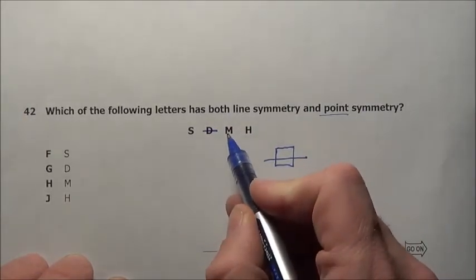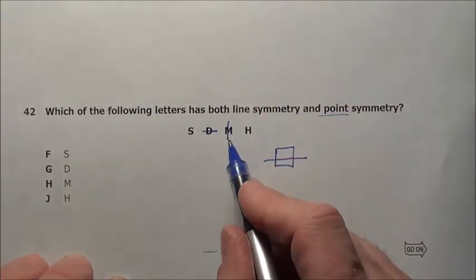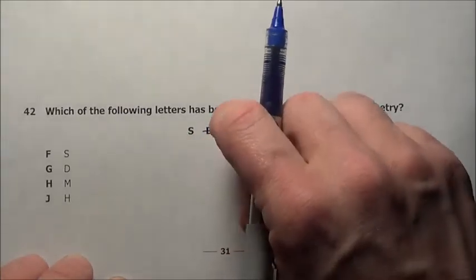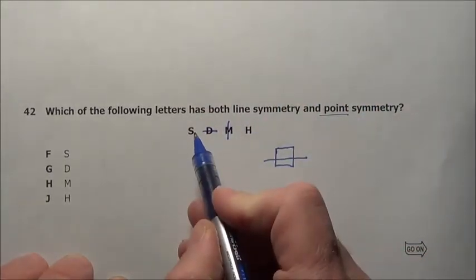What about M? Well M has nice line symmetry right down through here, vertical line of symmetry, but if you spin it 180 degrees, boom it gives you the letter W, that doesn't do any good. What about S?